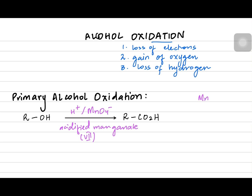When we write acidified manganate we need to write the 7 in the name, or we can just call it acidified manganate. This happens with a primary alcohol, which we can also write as 1° alcohol, and we get a carboxylic acid as a product.